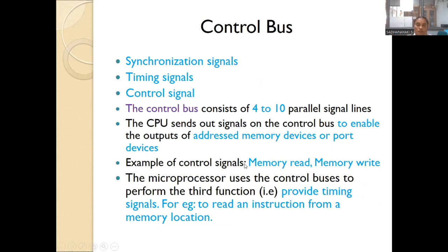The control bus is used for synchronization and timing signals. It consists of 4 to 10 parallel signal lines. The CPU sends out signals on the control bus to enable the output of an addressed memory device or I/O device. If referring to a particular peripheral device, it will be enabled; if referring to a memory address, that memory will be enabled; if referring to an output device, it will be enabled. For example, memory read and memory write are control signals. The microprocessor uses the control bus to perform the third function: providing timing signals — for example, to read an instruction from a memory location using the memory read control signal.